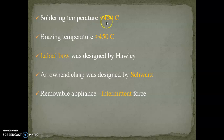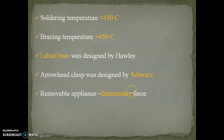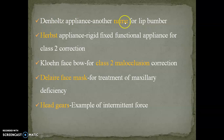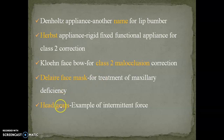Soldering temperature is less than 450 degrees Celsius, whereas brazing temperature is more than 450 degrees Celsius. The short labial bow was designed by Holley, and the arrowhead clasp was designed by Squats. A removable appliance exerts an intermittent type of force. The angle of the arrowhead clasp is around 45 degrees. The another name for the lip bumper is Danz-Holtz appliance. The Holtz appliance is a rigid fixed functional appliance used for class II correction. The Crozat face bow is also used for skeletal class II malocclusion. The Delaire face mask is used for treatment of maxillary deficiency. Headgear is also an example of intermittent type of force.